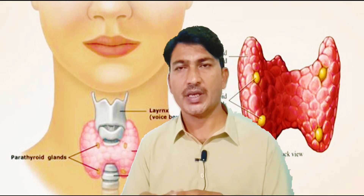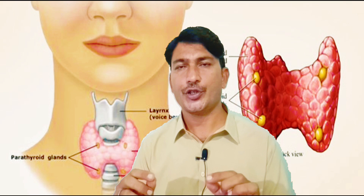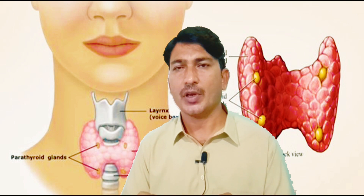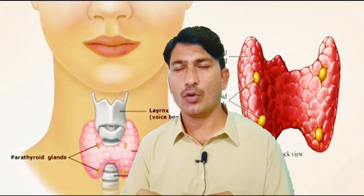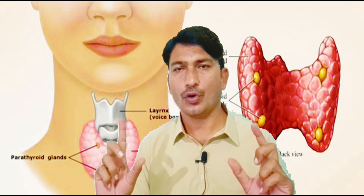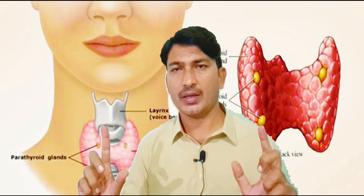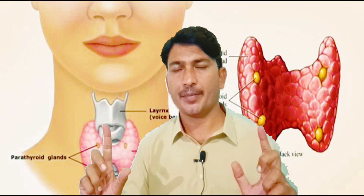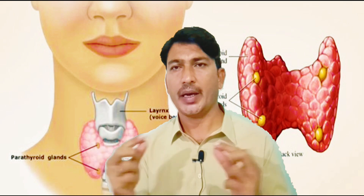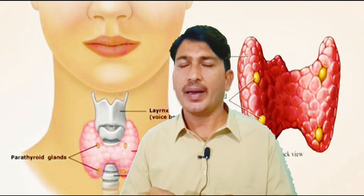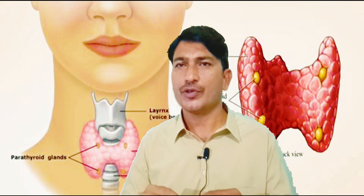Once again, in short: the thyroid gland is located in the neck region, it is bi-lobed, with two lobes present on either side of the trachea. This is all about the thyroid gland, and we will end our topic here.